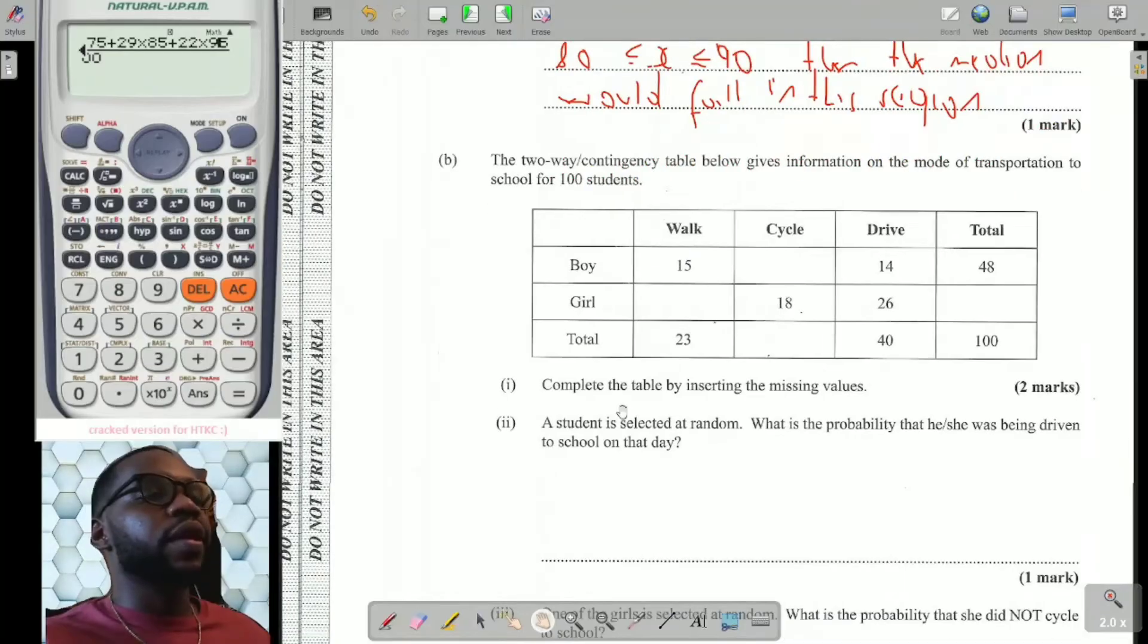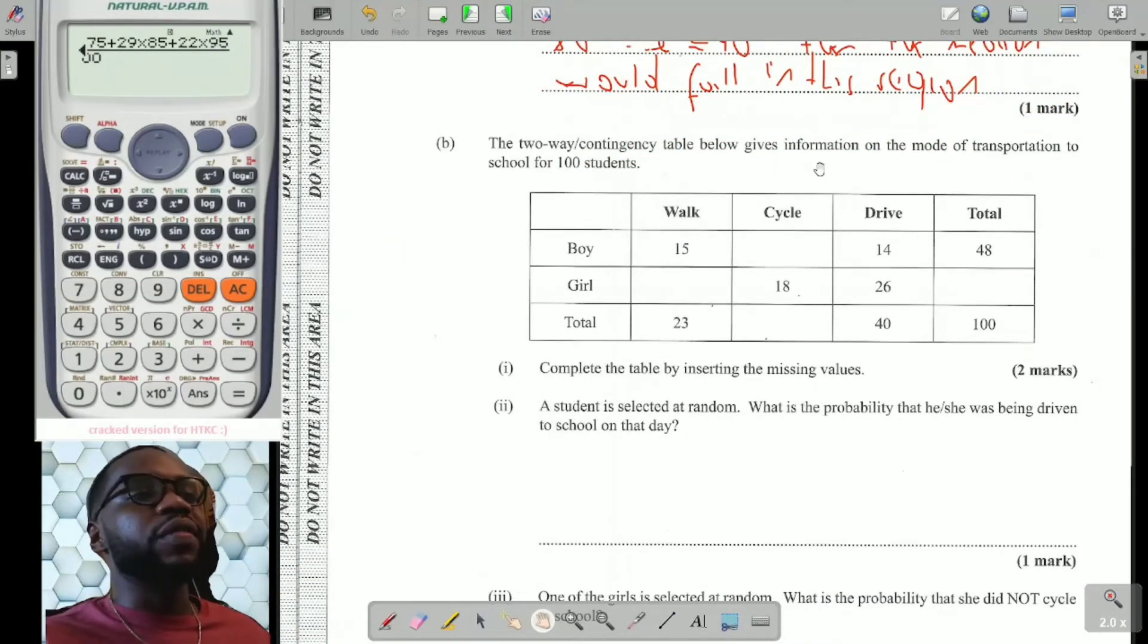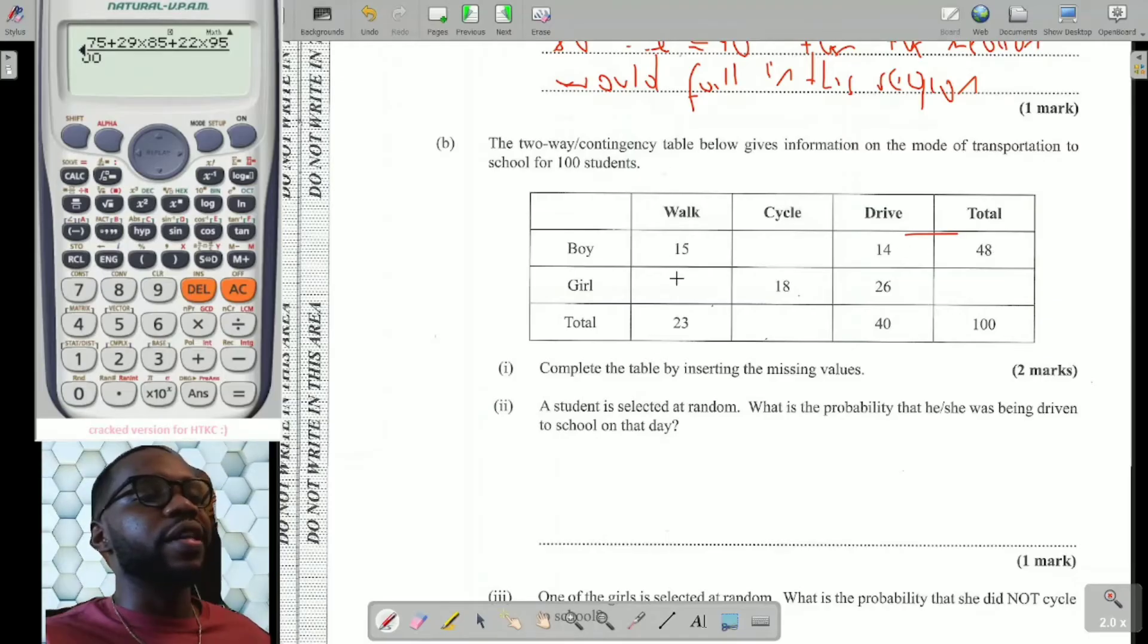Question B. It says a two-way contingency table below gives information on the mode of transportation to school of 100 students. Complete the table by inserting the missing values. Now, one thing about the contingency table, it always has a total for the row and for the column. So if I'm going vertical for walk and I want to know the number of girls who walk, I simply just need to say 23 take away 15, which is going to give me 8.